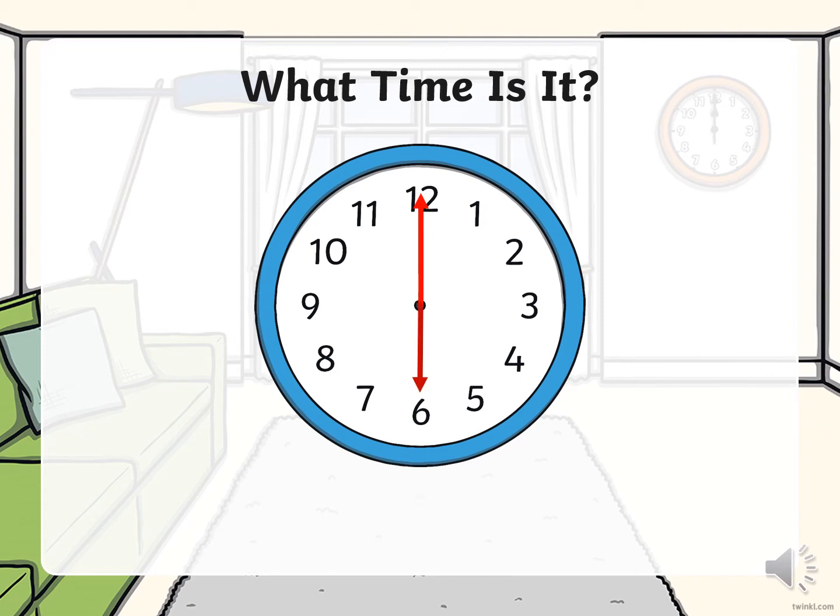Now what time is it? Let's have a look. The short arm is pointing to 6 to say what hour, and the long arm is pointing to the 12 which means o'clock. Yes, you are right — it is 6 o'clock.